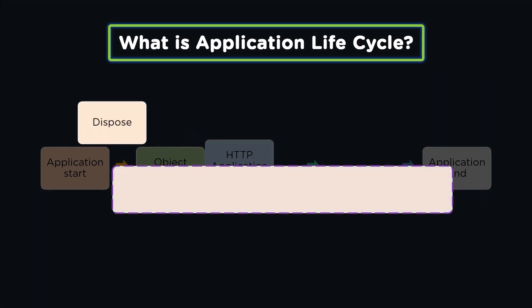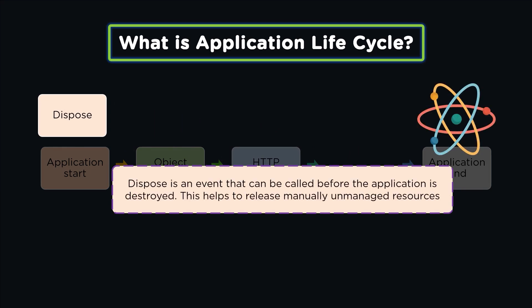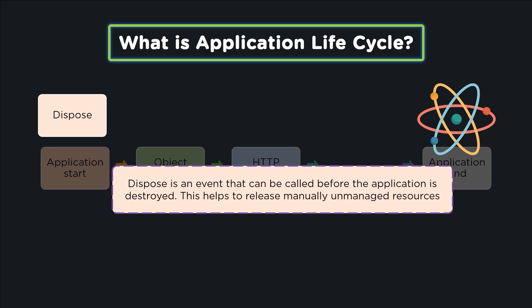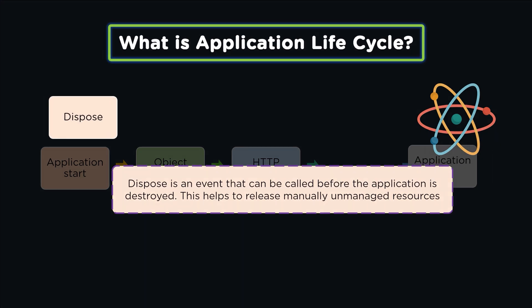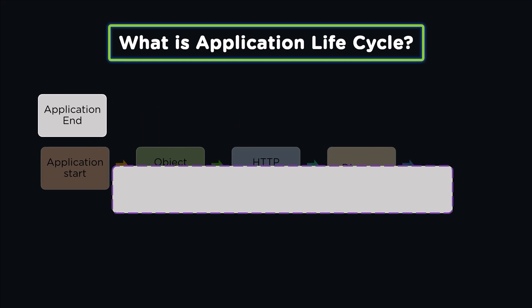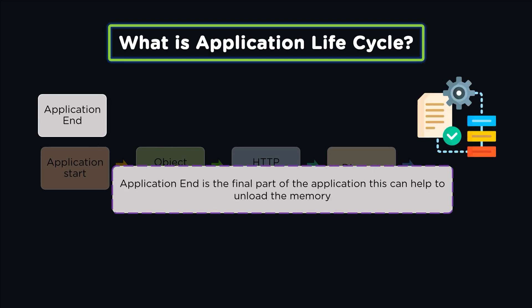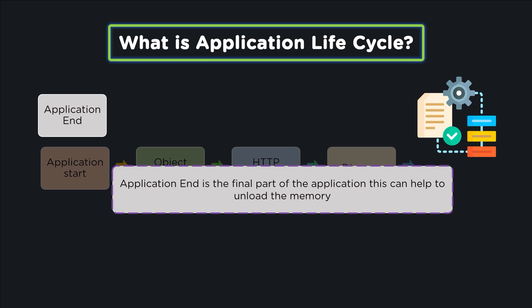The fourth stage is dispose. Dispose helps in erasing the unmanaged resources when the objects are no longer needed. The last and final stage is application end, which helps to unload the memory of an application. Unloading memory means cleaning up the unwanted files in the application.